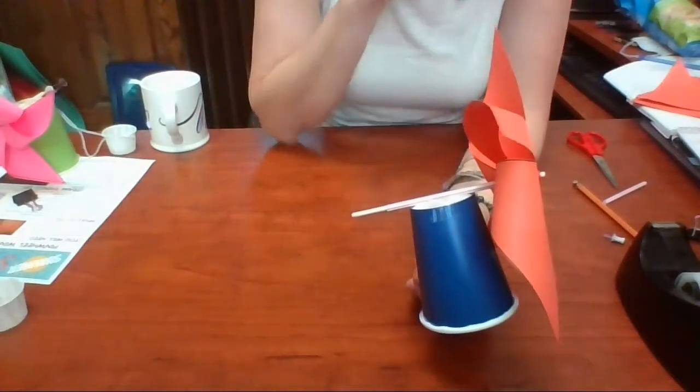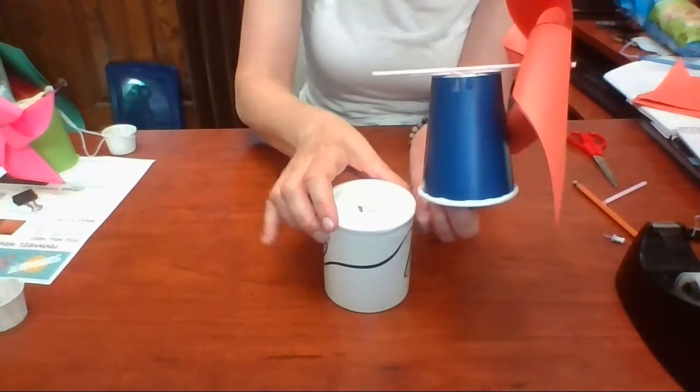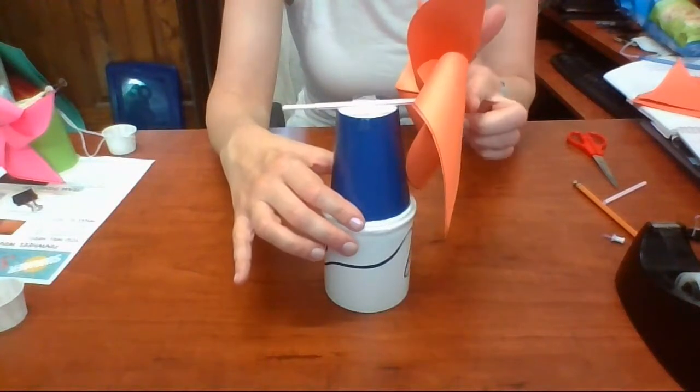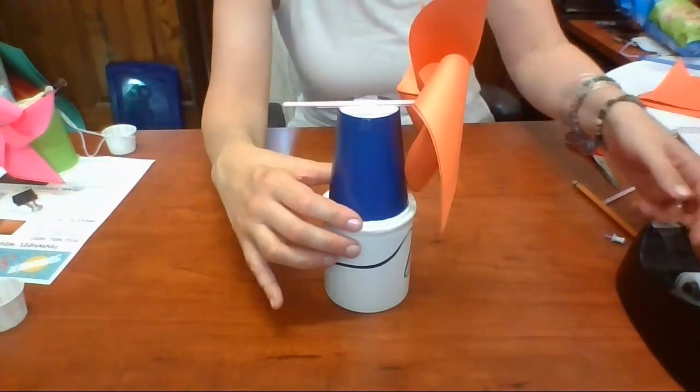Now I can thread the dowel back on. To give my windmill a little bit of height I'm going to set it on top of something. I'm going to take this mug, turn it upside down and set the windmill on here. Now it might be a little bit tippy.